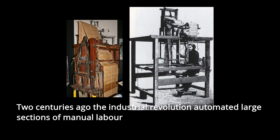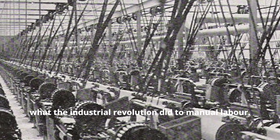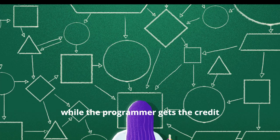Two centuries ago, the Industrial Revolution automated large sections of manual labor. Machine learning will do to thinking what the Industrial Revolution did to manual labor. Programmers who aren't too bright can use these learner algorithms to do all the work, while the programmer gets the credit.